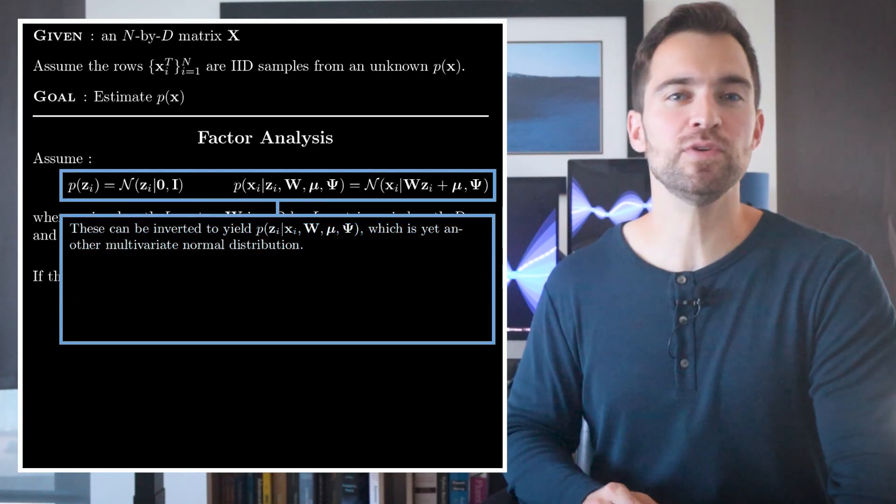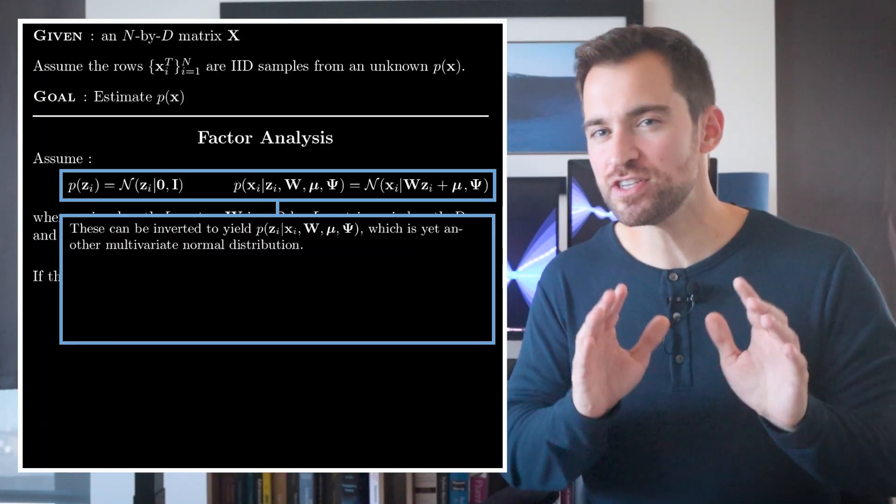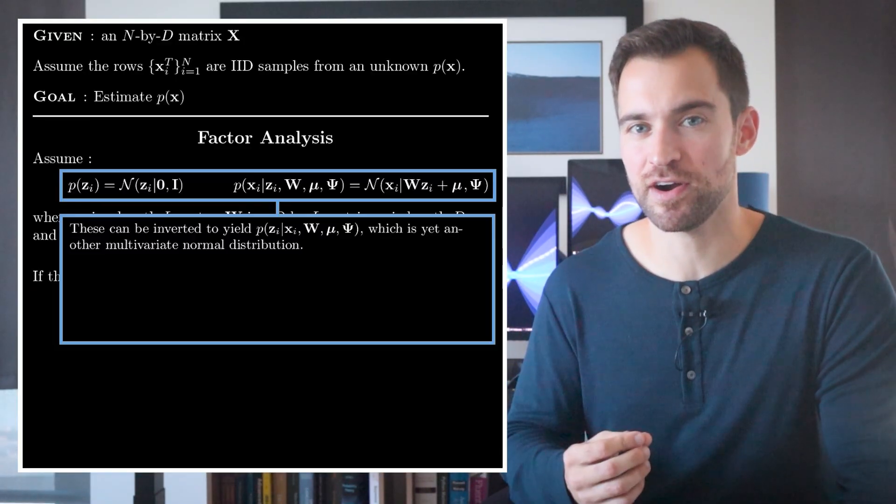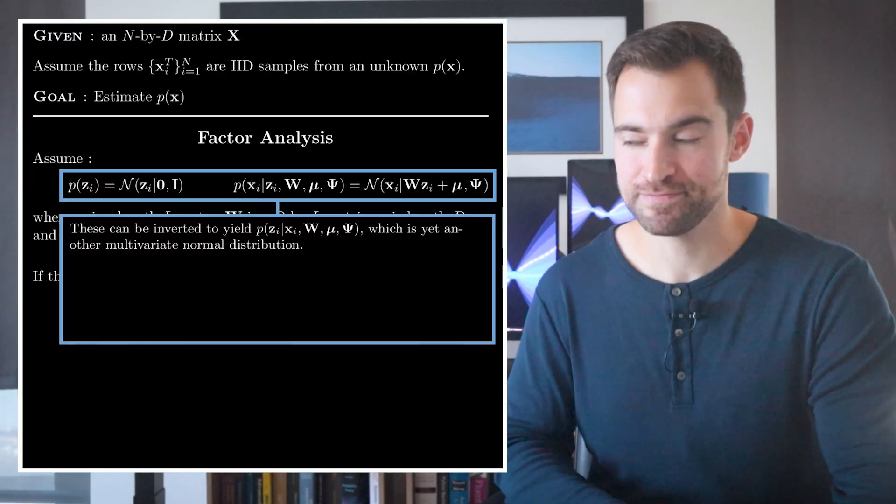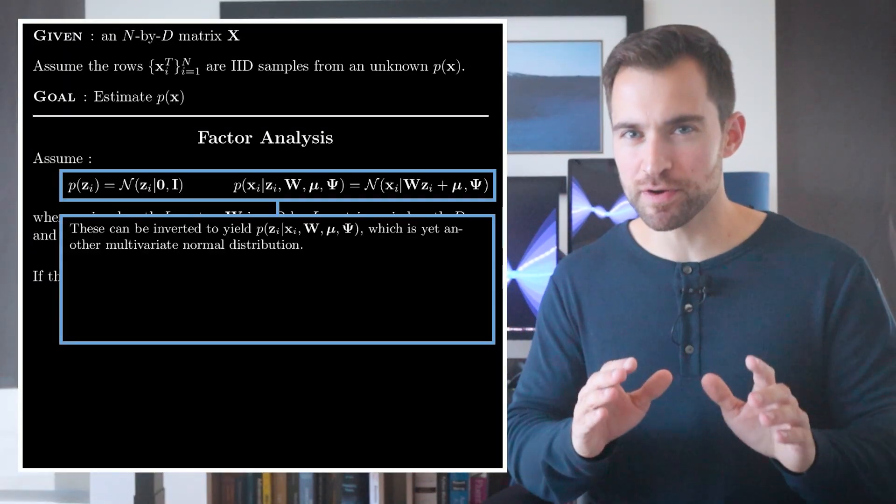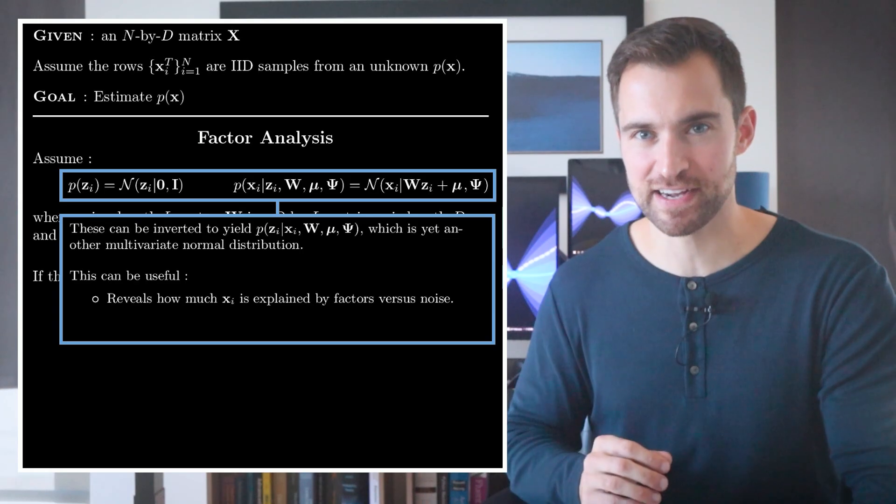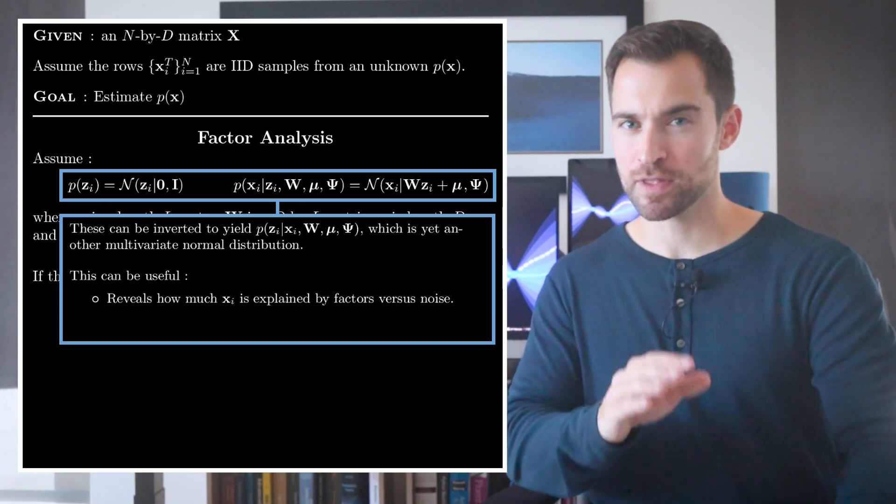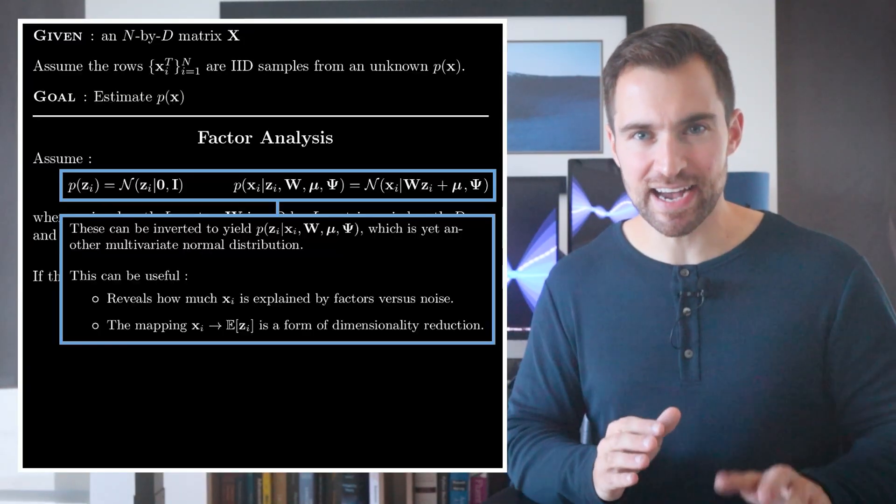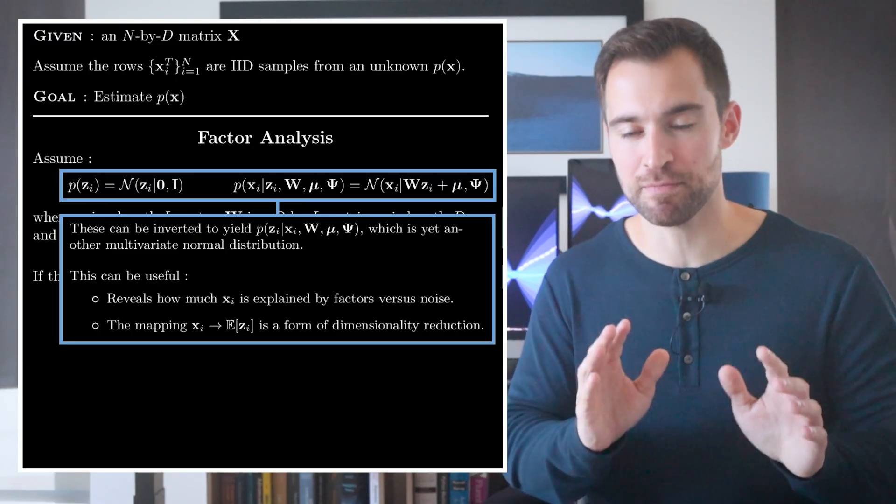You can invert these equations to give you a distribution over Z given an X. Remember, we never actually observe any Zs. We just assume they exist to generate our observations. But, we can estimate a distribution over what their likely values are. And it turns out to be yet another normal distribution. In this case, they have some weird looking mean and covariance, so I'll spare you and I'm not going to include them. What's important is how this could be useful. Basically, ZI tells you how much XI is explained by the factors, which could be an insightful inference. Also, it provides a mapping from XI to the mean estimate of ZI. Since ZI has lower dimension than XI, this is a type of dimensionality reduction, which can be useful in a pre-processing step in a modeling pipeline.